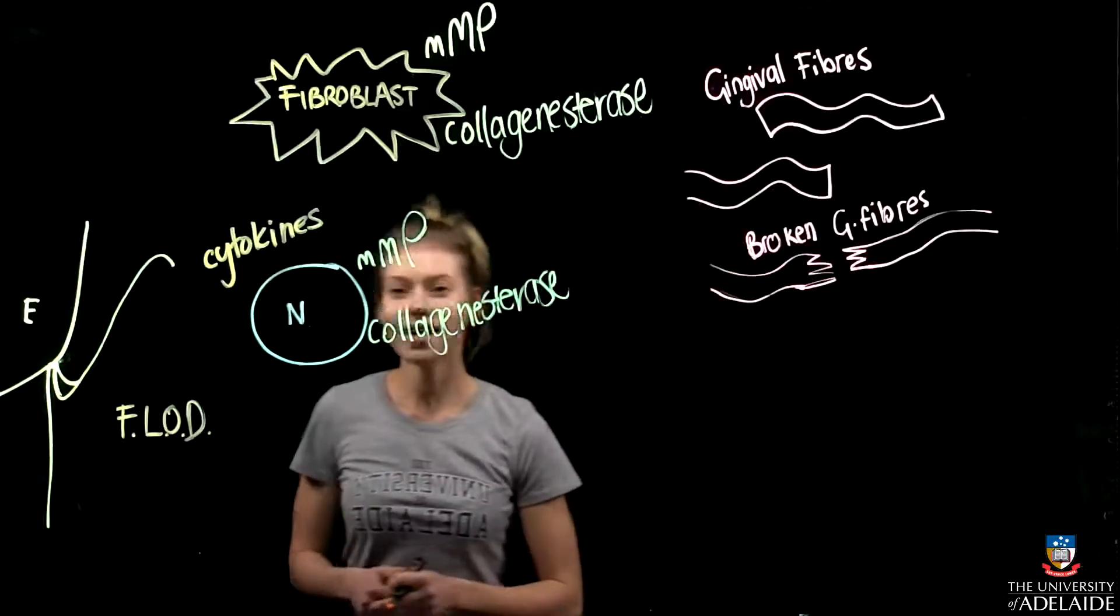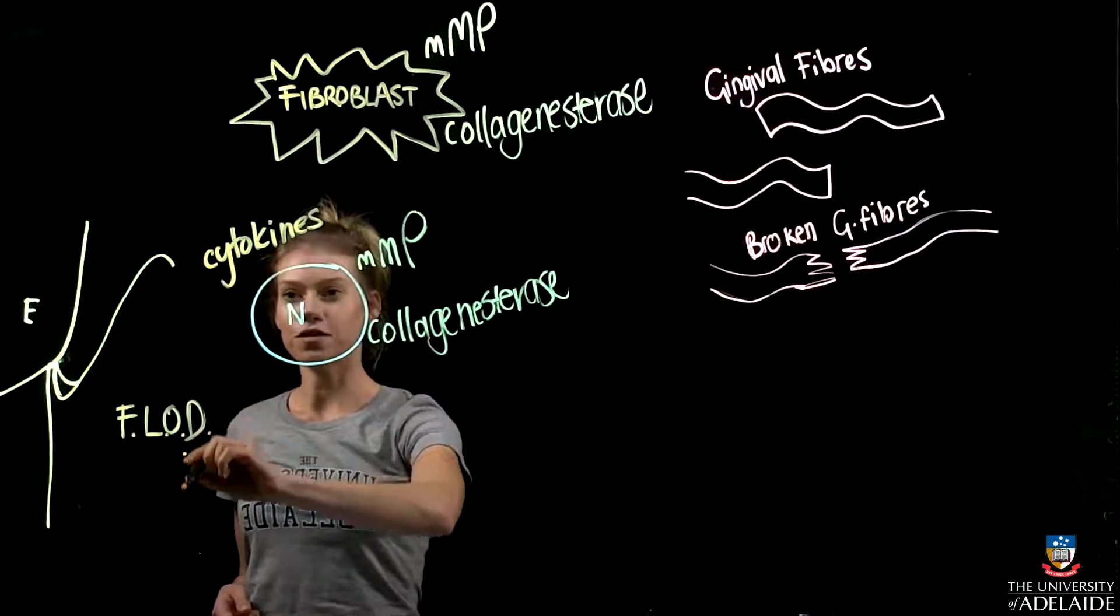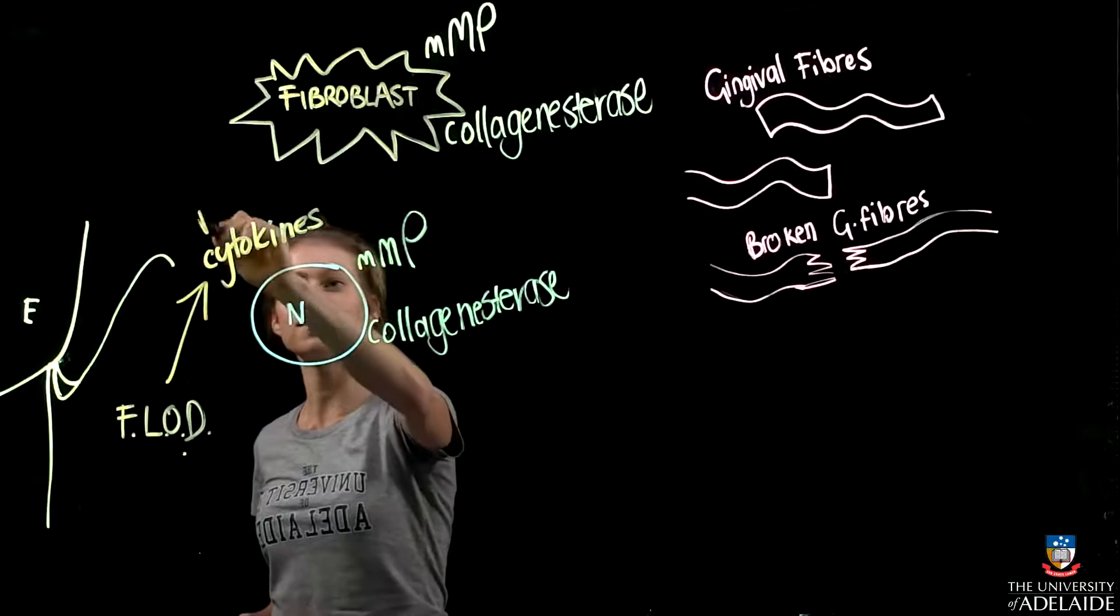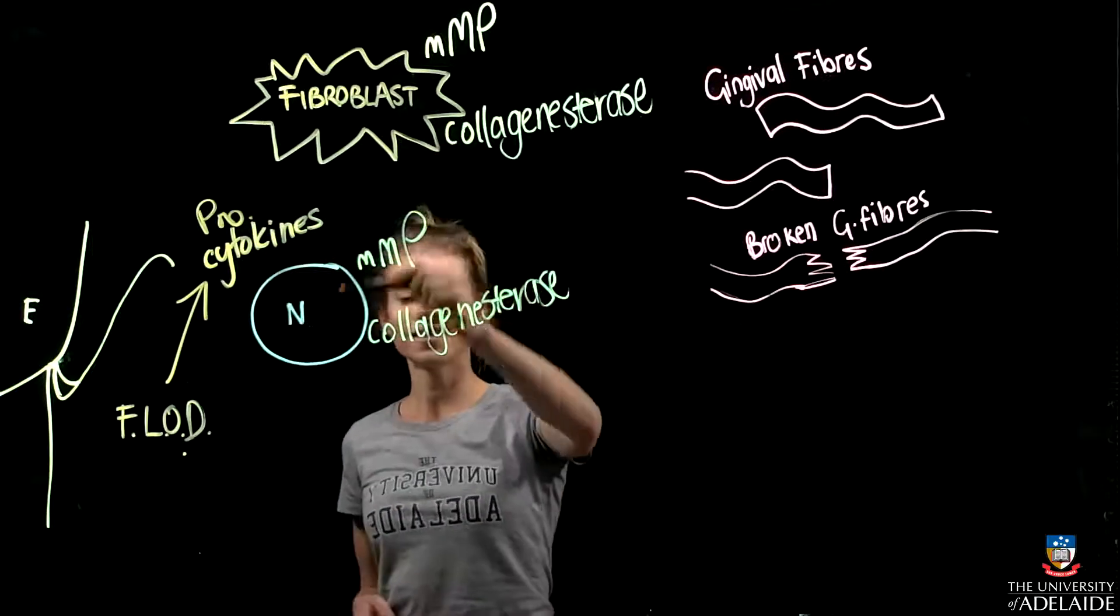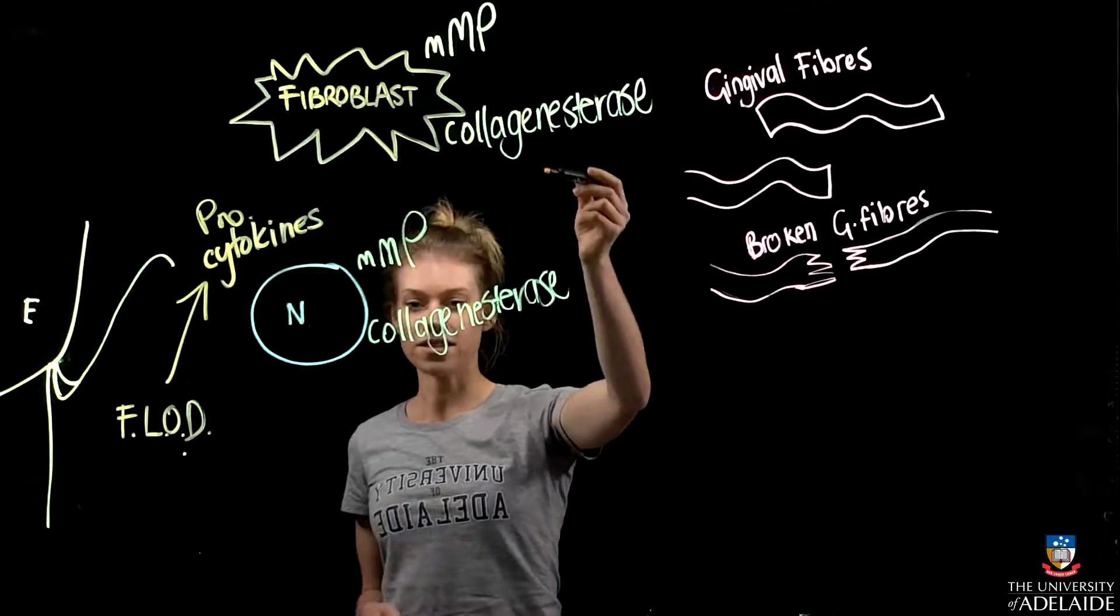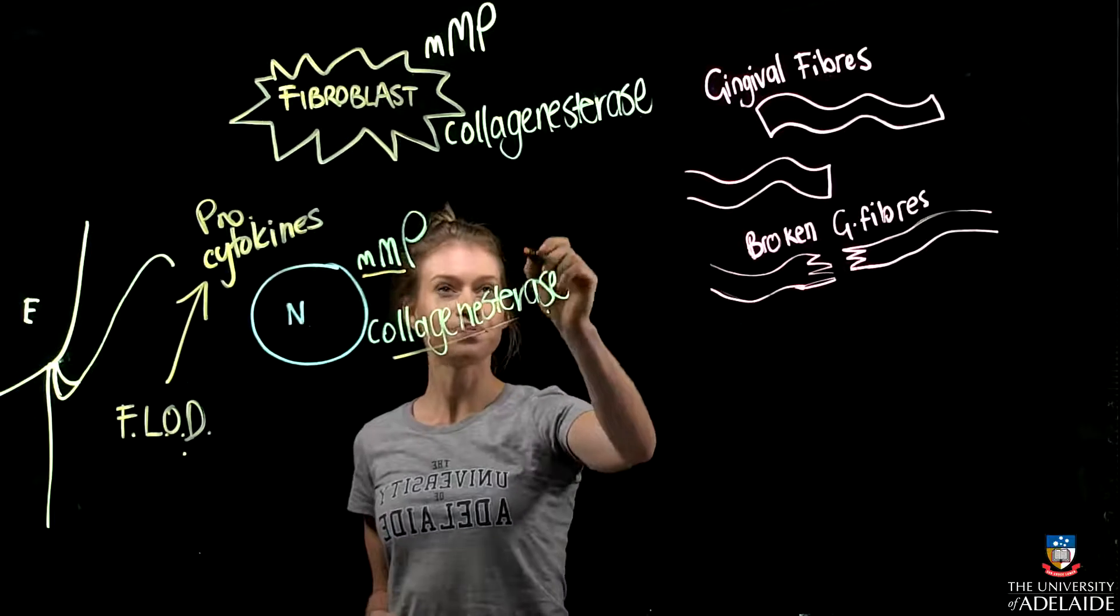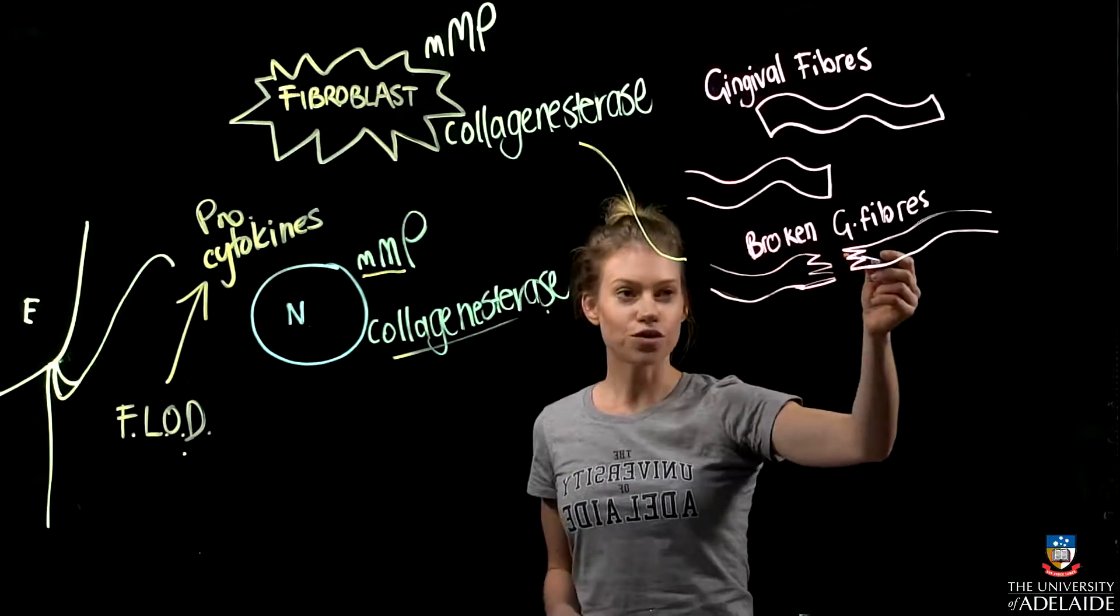As the plaque and the biofilm matures, it overwhelms the first line of defense, which causes an increase in pro-inflammatory cytokines. These cytokines stimulate fibroblasts and neutrophils to release enzymes such as MMPs and collagenase, and these enzymes cause the breakdown of gingival collagen fibers.